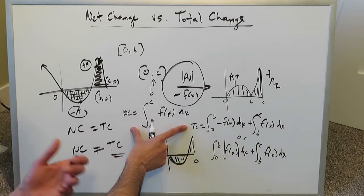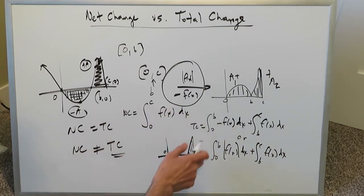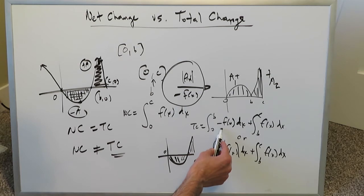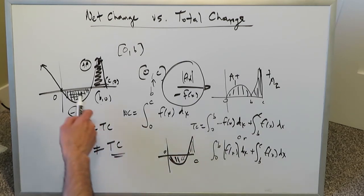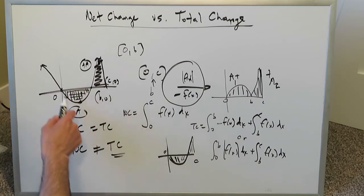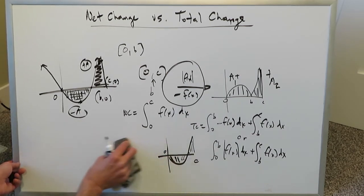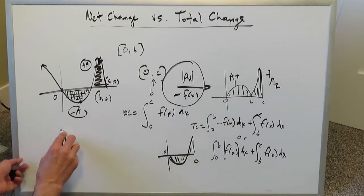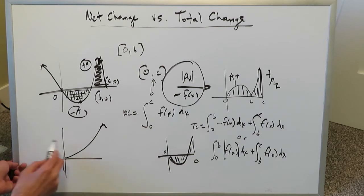The net change equation is your ordinary definite integration expression — no modification needed. The total change expression requires modification: either a minus sign before your function or absolute value brackets, but only for sub-intervals where the curve produces a negative area. If no negative area is generated, no modification is needed, and the total change and net change expressions will be the same.